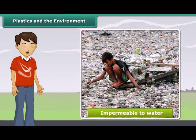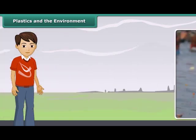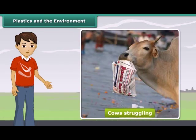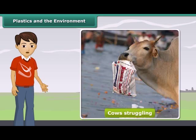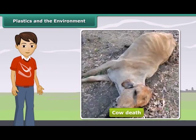Also, as plastics form a cover on the ground surface and are impermeable to water, the rain water would not be absorbed into the soil, thus diminishing our underground water reservoirs. You must have seen cows struggling to take out food from plastic bags thrown near garbage heaps. They end up eating the plastic bags as well, which can choke their respiratory tract or form a lining in their stomachs causing their death.